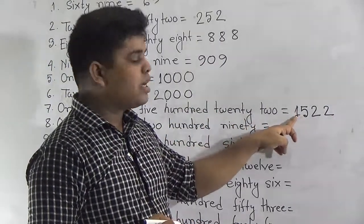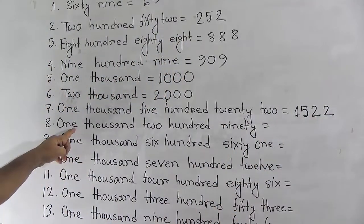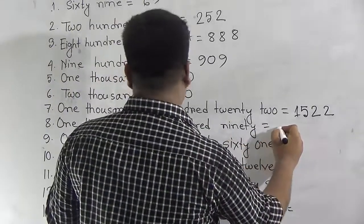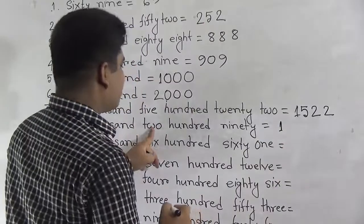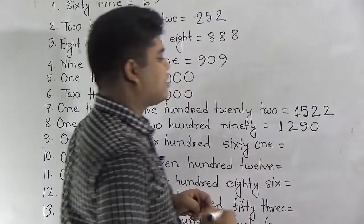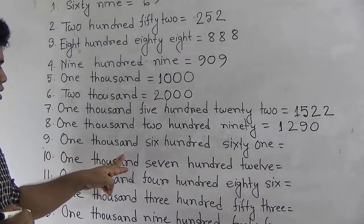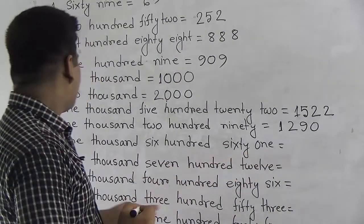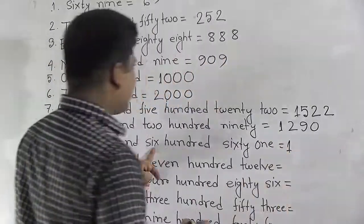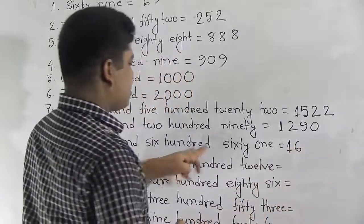We write 1,522. Our next number is 1,290. We write 1,290 — 90 means 9 and 0. Our next number is 1,661.